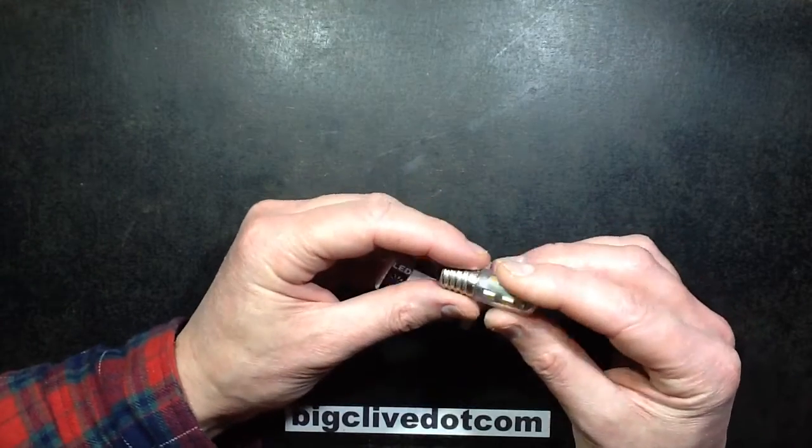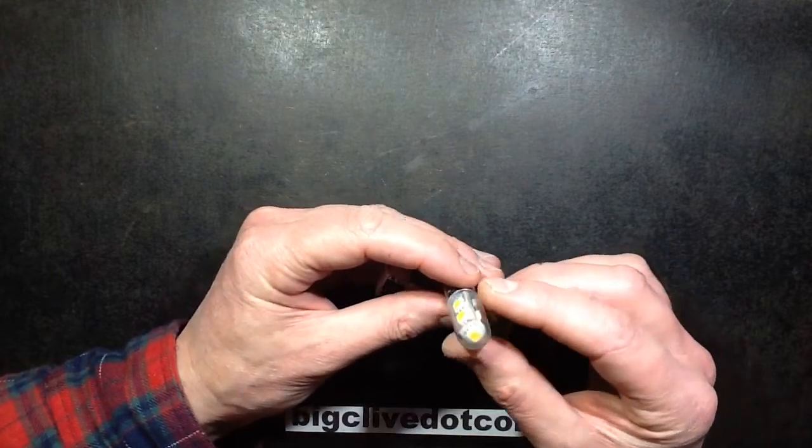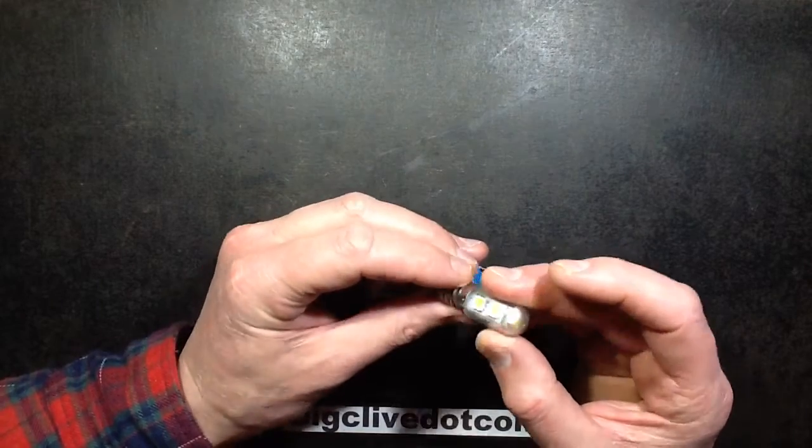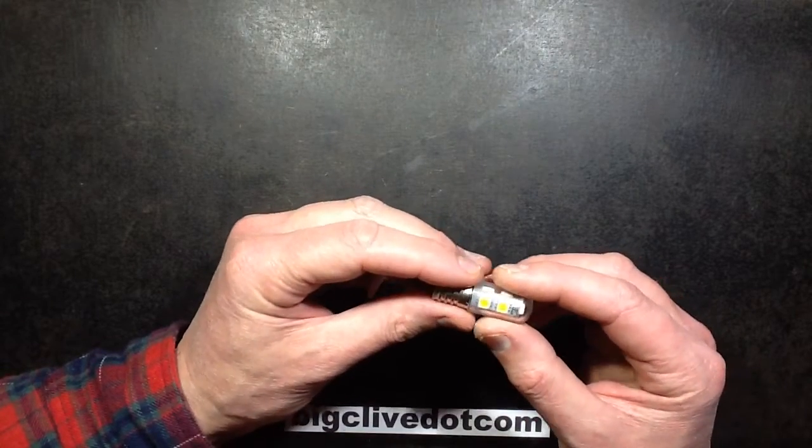Another small LED lamp. This one is designed for things like fridges and it's got 1, 2, 3, 4, 5, 6, 7 5050 LEDs.